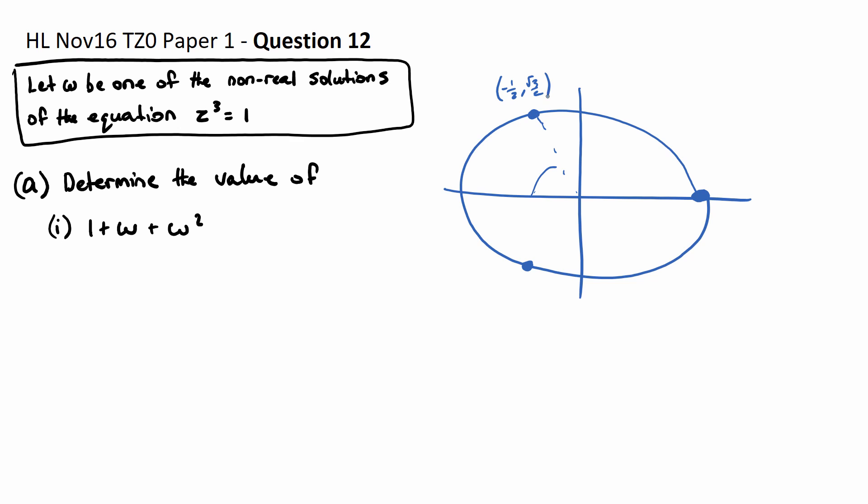Positive root 3 on 2 and down here we're going to get negative a half negative root 3 on 2 and this will just be at 1, 0.